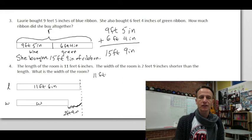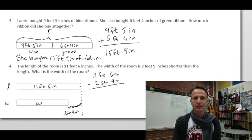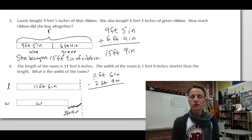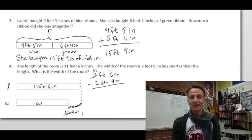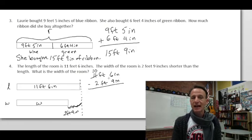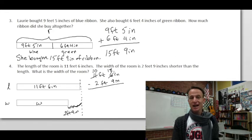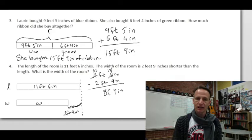Set up: 11 feet six inches minus two feet nine inches. We can't do six minus nine, so we leave 10 of those 11 feet alone and decompose one foot as 12 inches, added to the six inches, giving 18 inches. 18 minus nine is nine inches; 10 minus two is eight feet. The width of the room is eight feet nine inches.